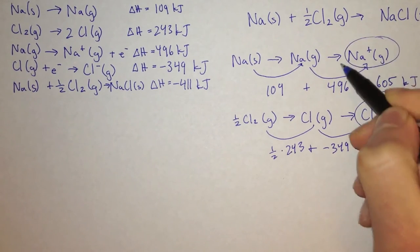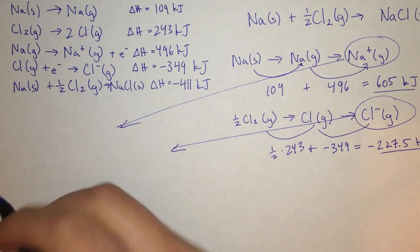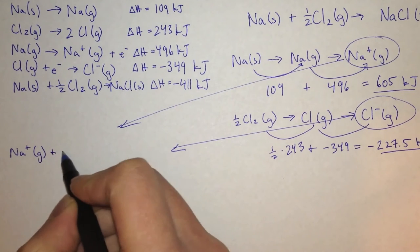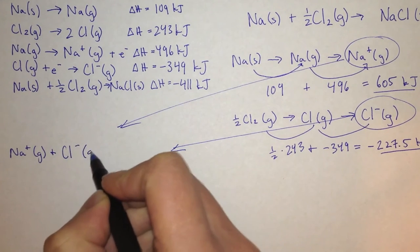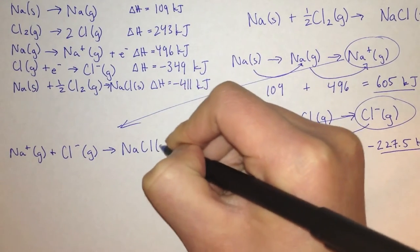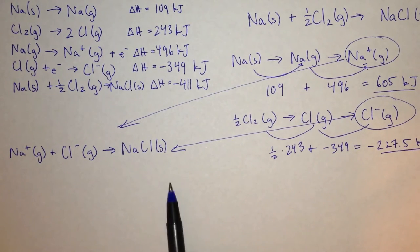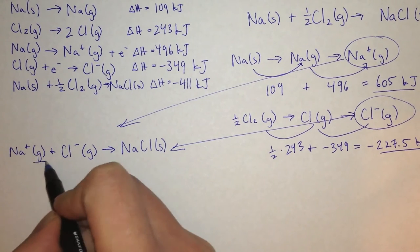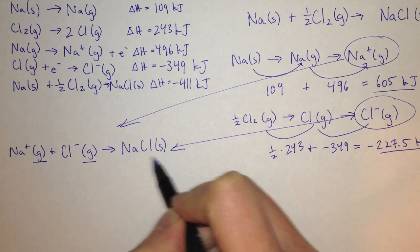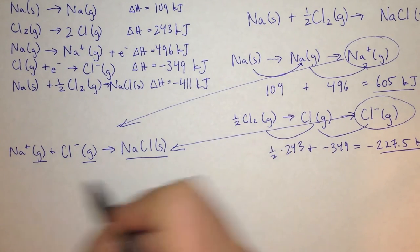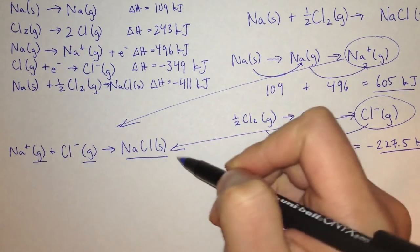So we take our sodium ion, which is a gas, plus our chlorine ion, which is also a gas, and they create sodium chloride — table salt — which is a solid. Since we have the heat of formation for both Na+ and Cl−, we can use this equation. We have two gases creating a solid with a crystal structure, so the energy of this equation is the lattice energy for sodium chloride.